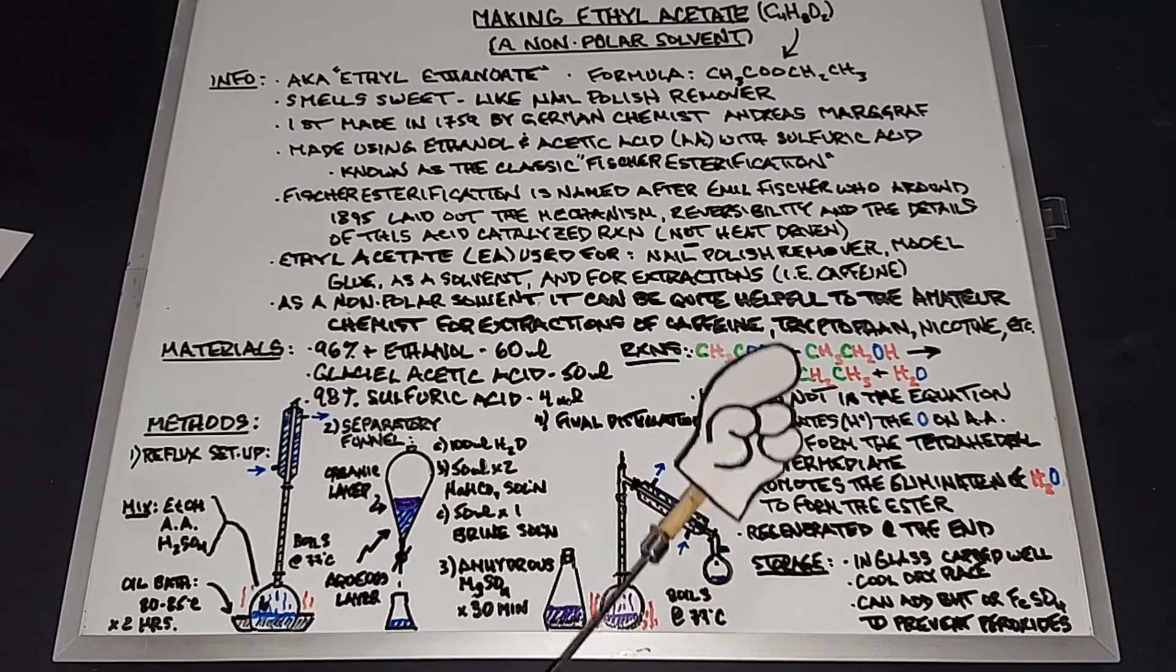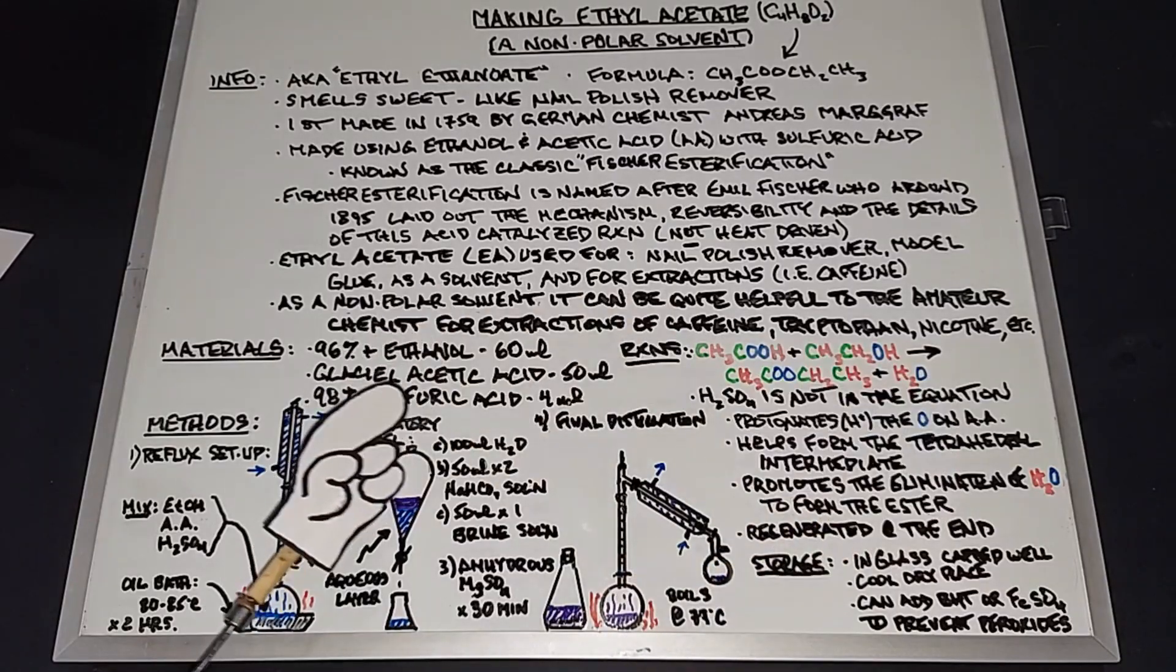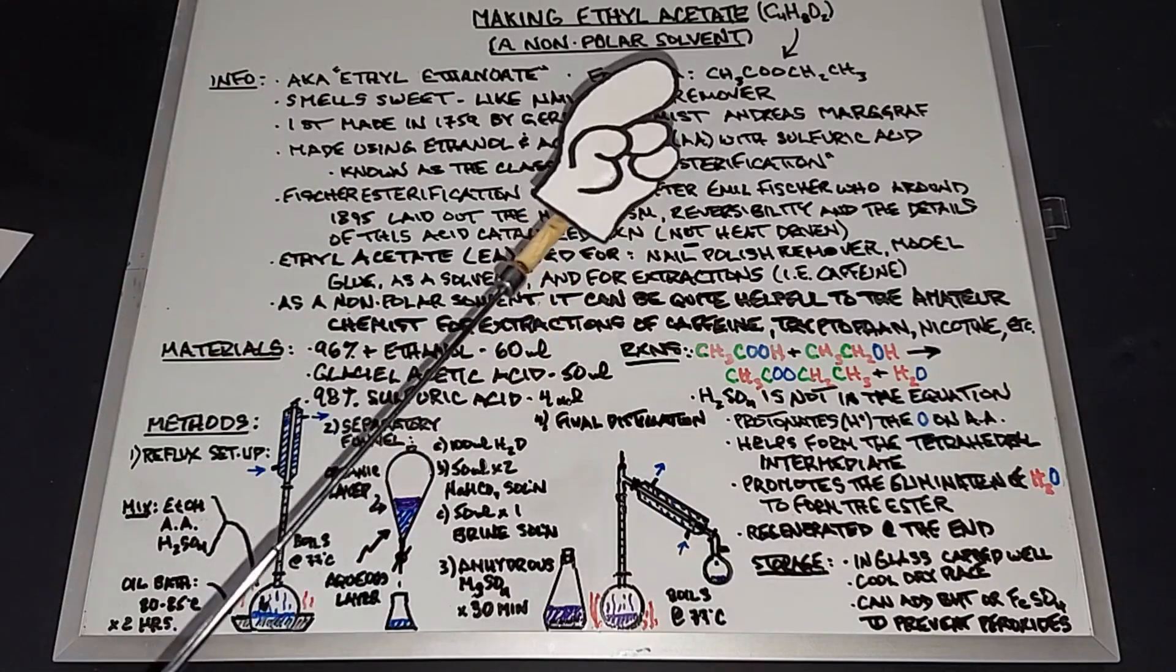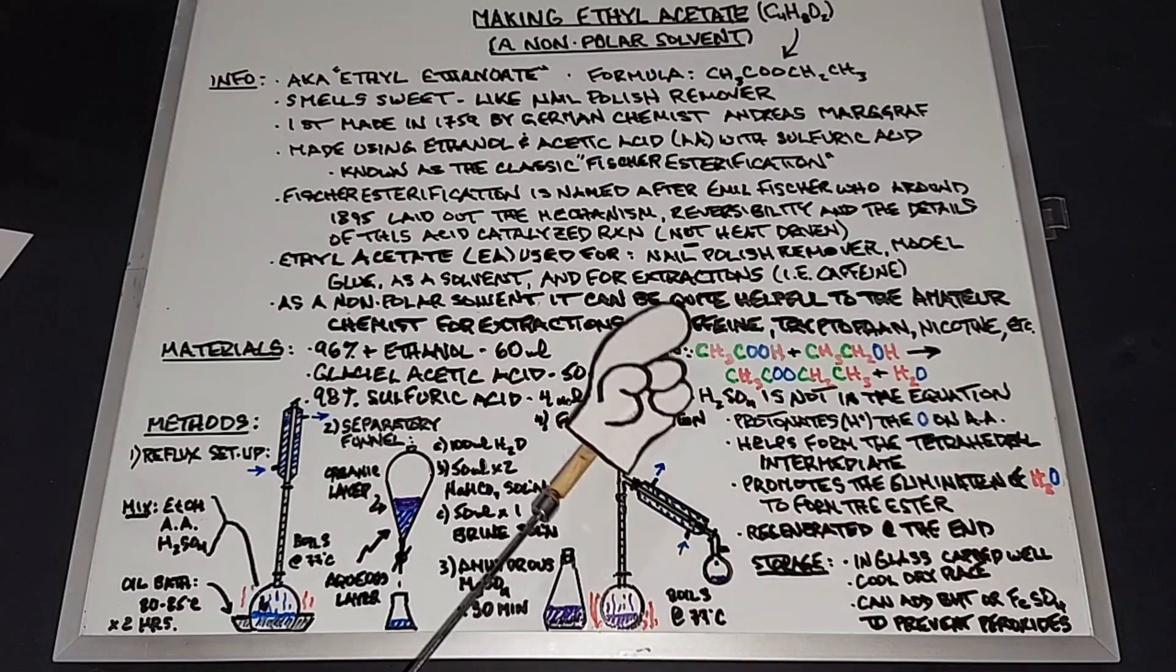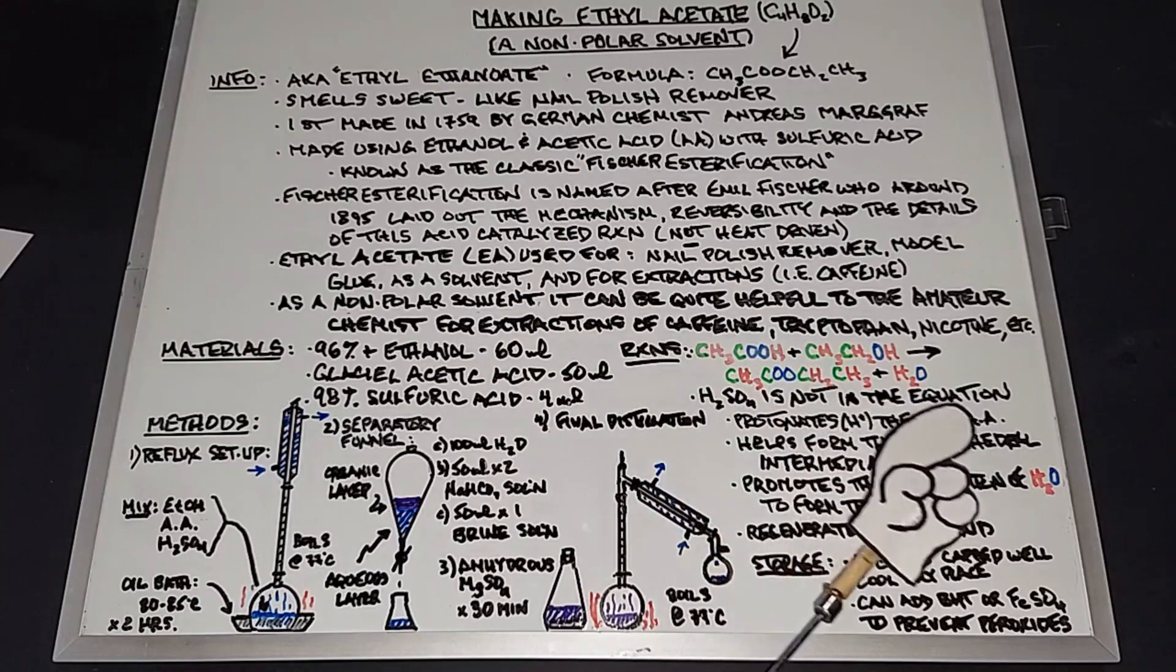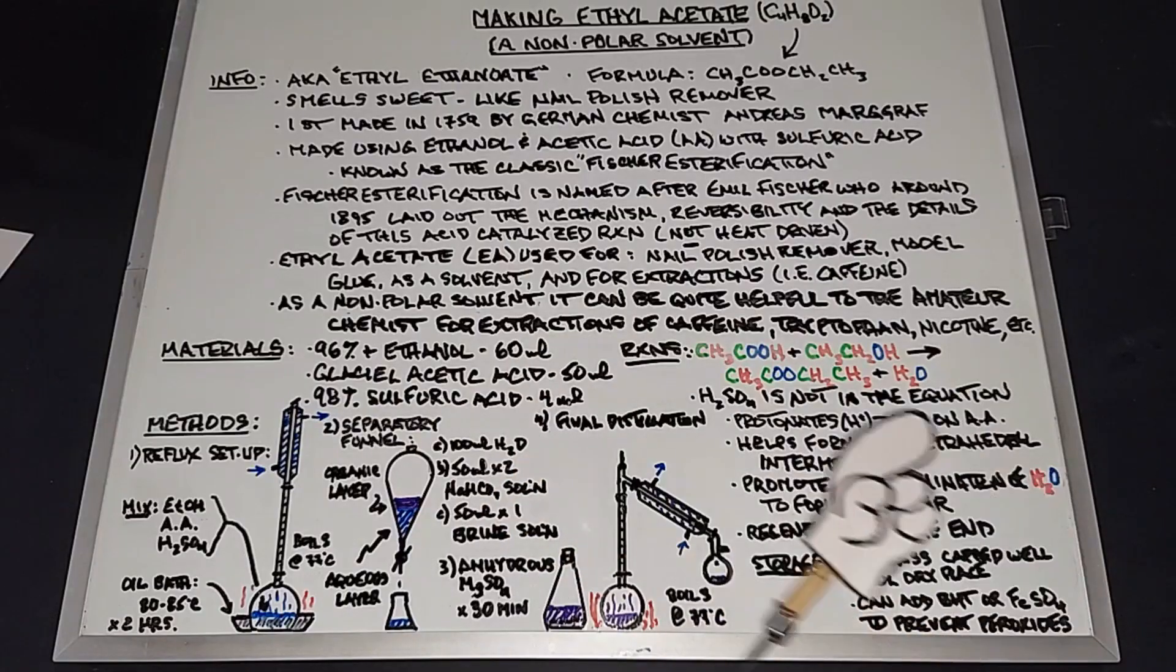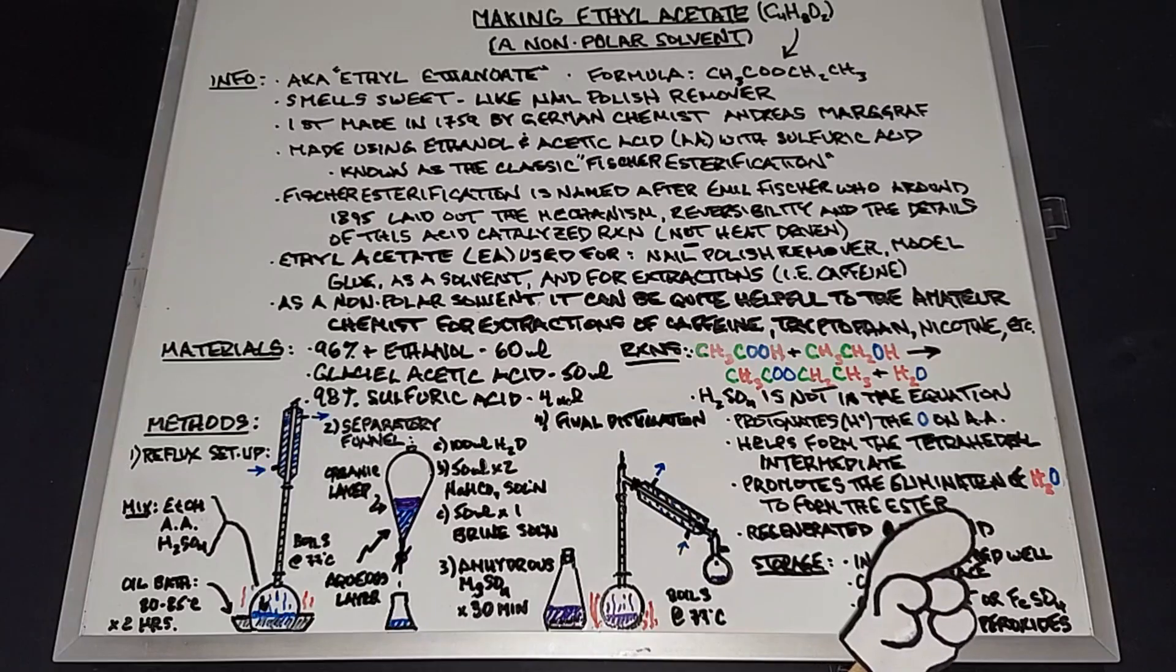You'll notice in this reaction equation that sulfuric acid is not in the equation, even though we're obviously going to be using it. That's because this is an acid-catalyzed reaction. As such, the sulfuric acid is not consumed in the reaction, and therefore it's not in the equation. But what the sulfuric acid does do: it protonates the oxygen on the acetic acid, it helps form the tetrahedral intermediate, and it promotes the elimination of water to form the ester. And of course, it's regenerated at the end, which is what makes it a catalyst.